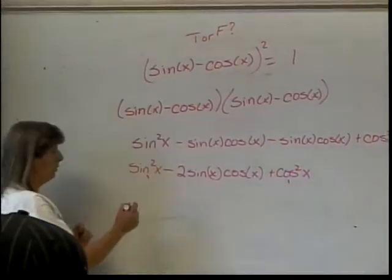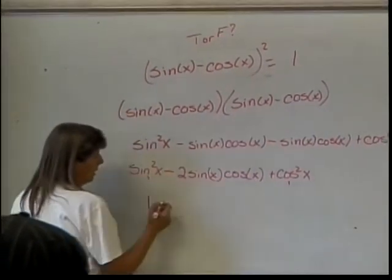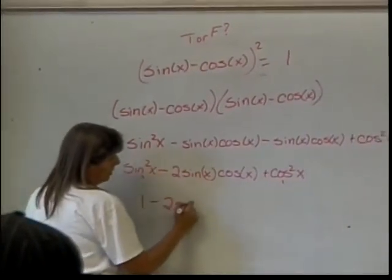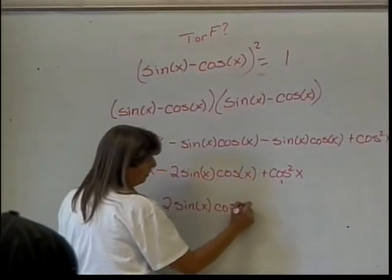All right, so we're going to put those together to be 1. So this is 1, putting this plus that together, minus 2 sine of x, cosine of x.